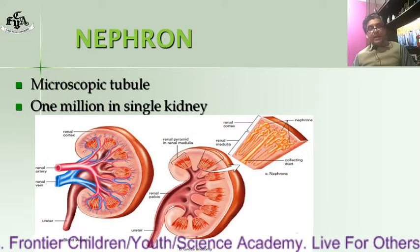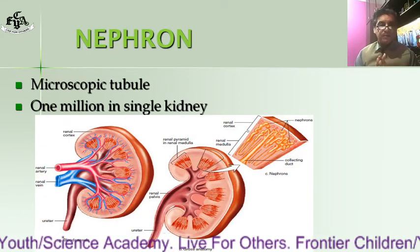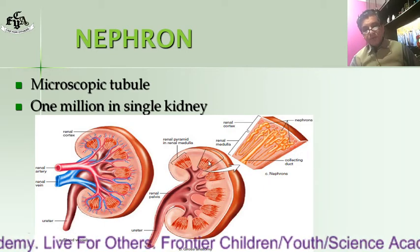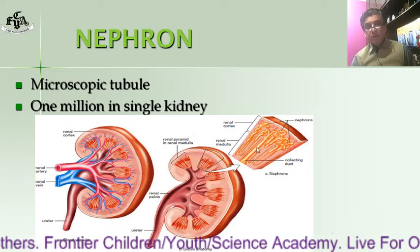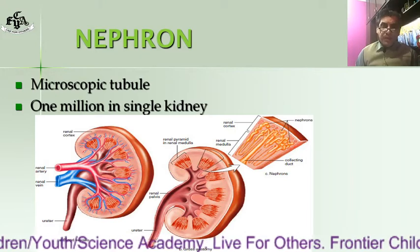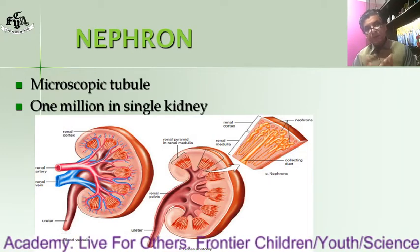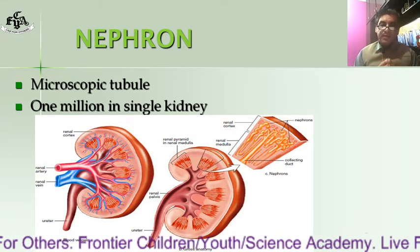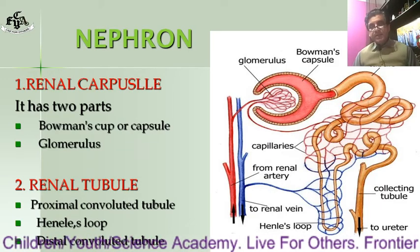The structural and functional unit of the kidney is the nephron. These are microscopic tubules present inside the kidney. Their number may be one million in a single kidney. The structure of the kidney is composed of these nephrons, and the function of the kidney — filtration of the blood — is also performed by the nephrons.